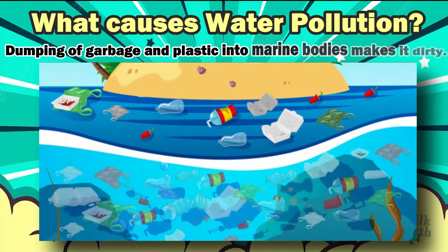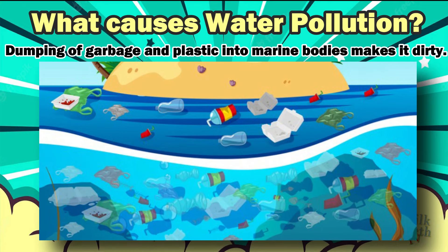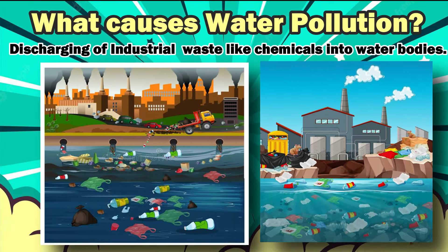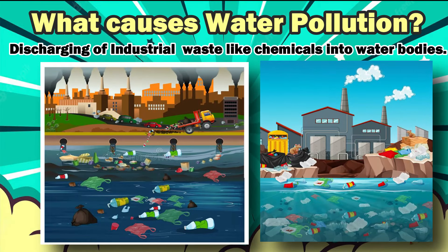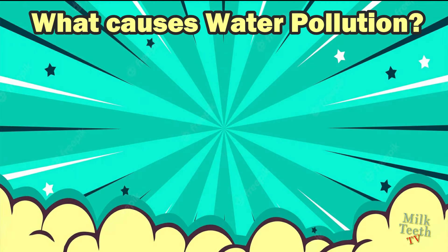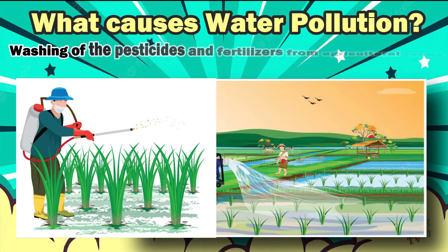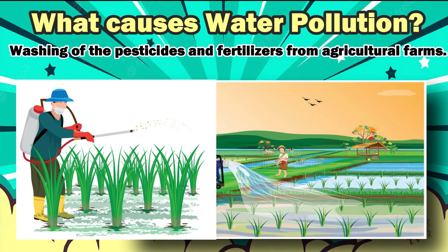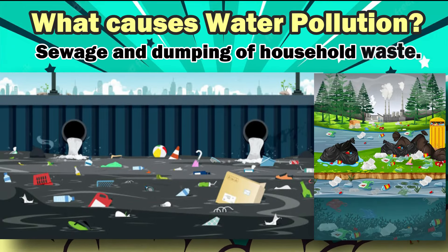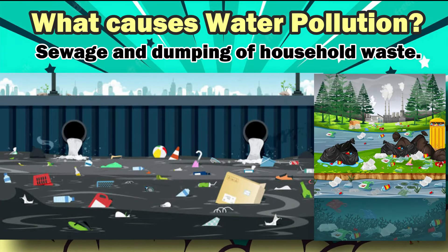What causes water pollution? Dumping of garbage and especially plastics into marine bodies makes the water dirty. Discharging industrial waste like chemicals into water bodies causes water pollution. Washing of pesticides and fertilizers from agricultural farms into water bodies also causes water pollution. Sewage and dumping of household waste into water also leads to water pollution.